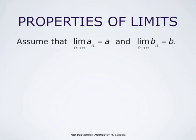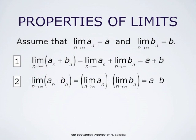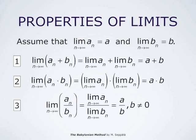Let a_n and b_n be two sequences with finite limits a and b respectively. The limit of the sum a_n + b_n is a + b. Likewise, the limit of the product a_n · b_n is a · b. And the limit of the quotient a_n / b_n is a/b, assuming that b is different from zero. These are properties of limits which we will use just in a moment.